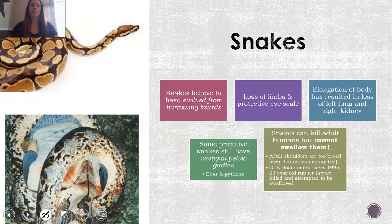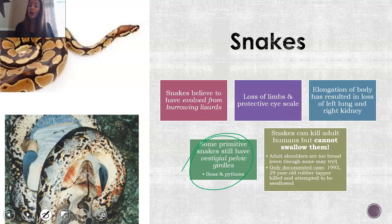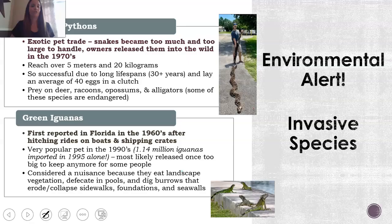A little bit more about snakes, because everyone's always interested in these. Snakes are believed to have evolved from burrowing lizards — proven by the fact they don't have limbs anymore and have lost their protective eye scale. It's also important to note that some snakes, like boas and pythons, still have a vestigial pelvic girdle, meaning they still have remnants of the pelvis where hind limbs would have attached. It's also important to note that snakes cannot eat an adult human, despite what you see on TV — our shoulders are too broad for them to swallow. There is a documented case of one attempting in 1995, but they cannot actually swallow us.